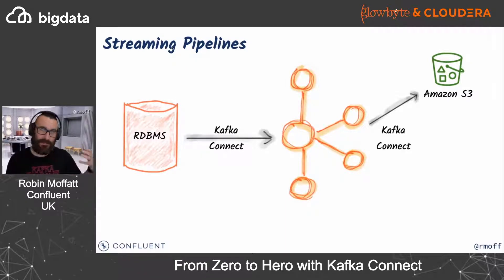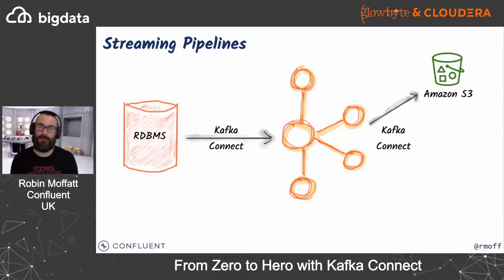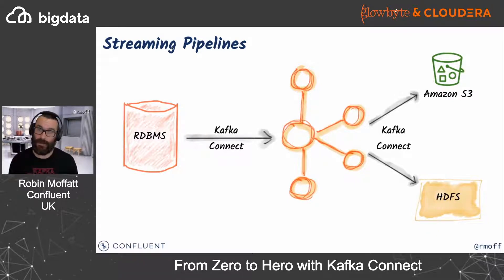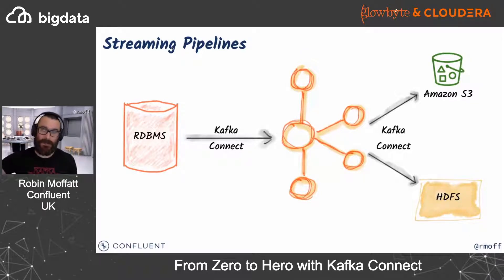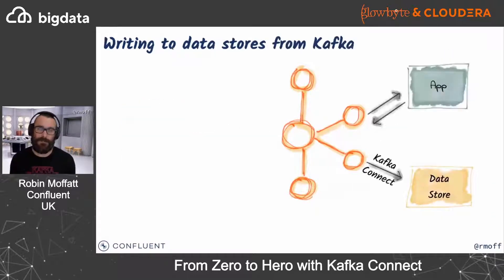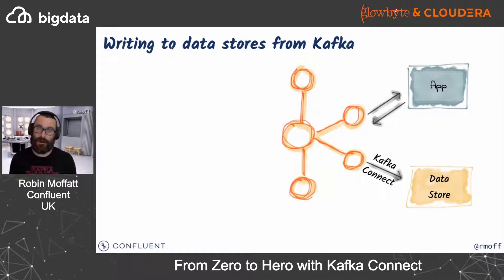We can use Kafka for building streaming pipelines, for offloading data from maybe a transactional database and streaming it somewhere else for analytics — taking data from our system, streaming it through Kafka, and then streaming that data to somewhere like S3. Because Kafka stores its data and we don't delete data once we've read it from Kafka, when we push it to S3 we can use that same data and push it to another target. Maybe we want cloud-based analytics with S3, or on-premises using something like HDFS.